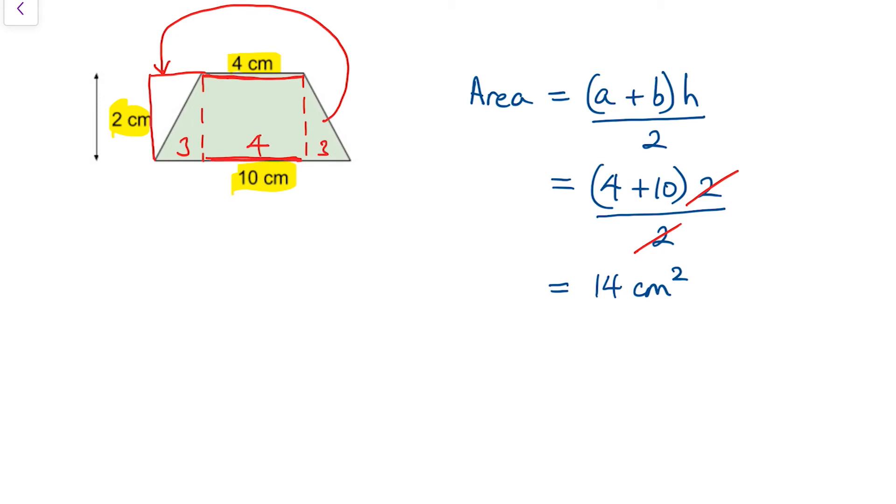Now, what I've got, now that I've moved this right-hand triangle away, I've actually got a rectangle, and my rectangle has a height of 2 and a width of 7.